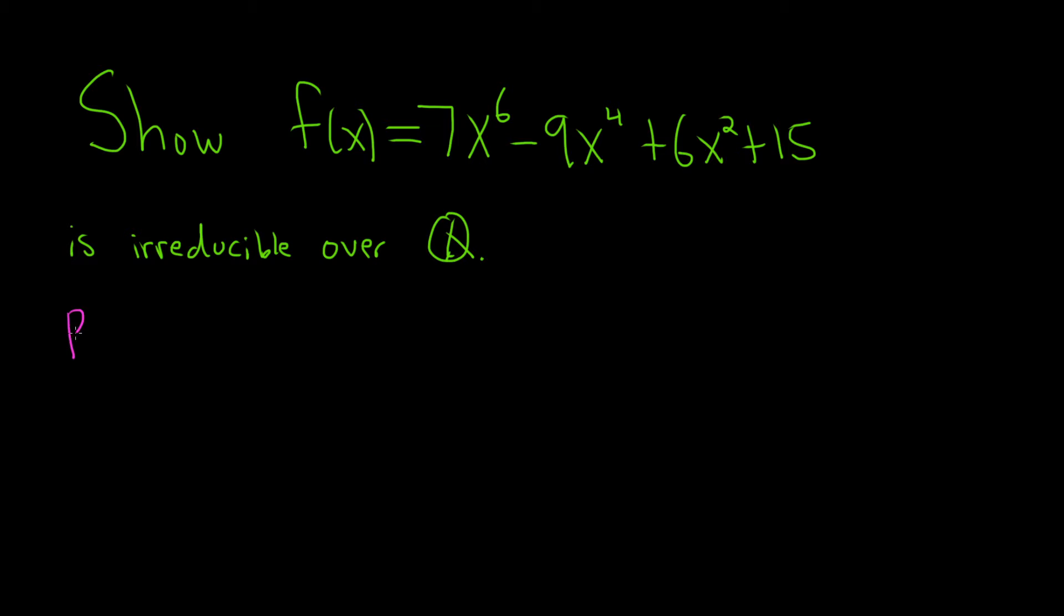So proof. Eisenstein says if you find a prime number p that divides this one, this one, and this one, but it doesn't divide the leading coefficient, and also p squared does not divide the constant factor, so it does not divide a sub 0.